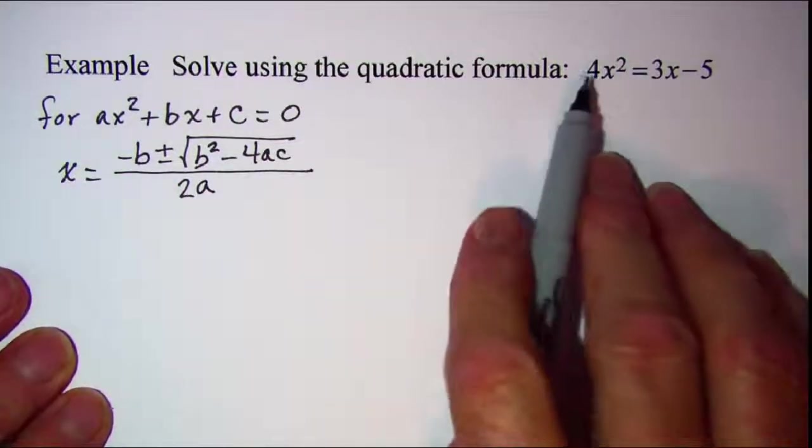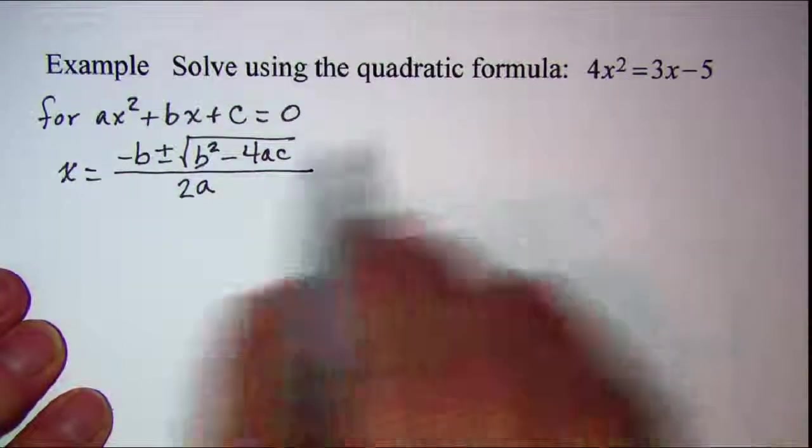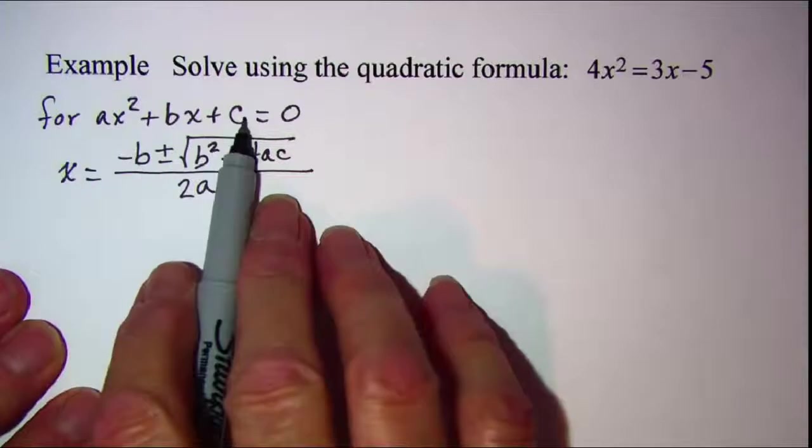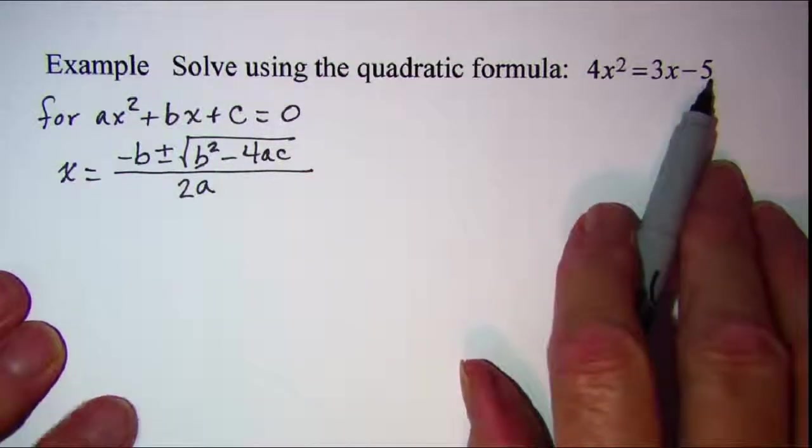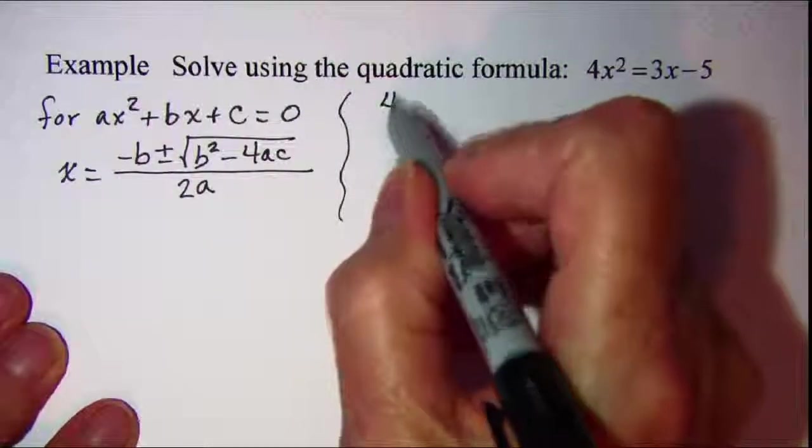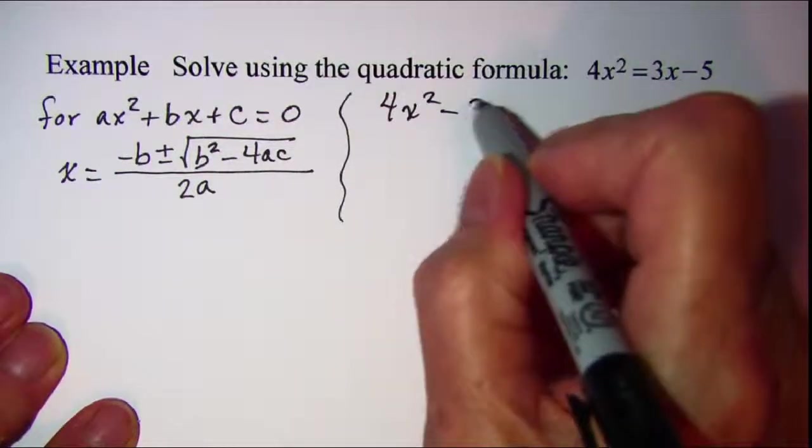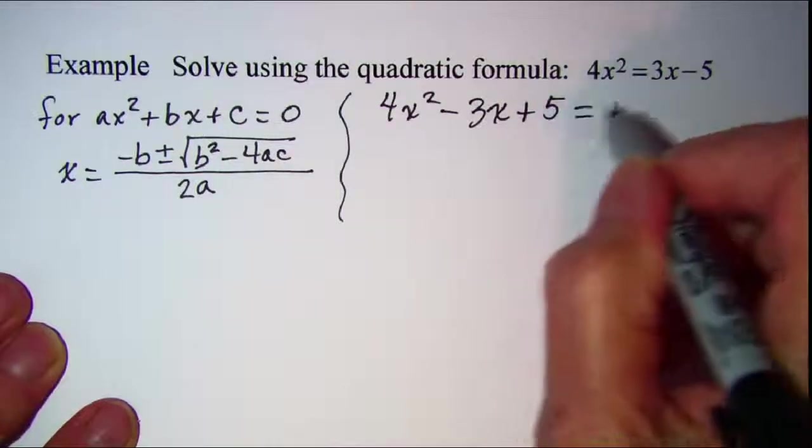So the first thing that we need to do if we're going to solve this by using the quadratic formula is we need to put it in standard form like this one. So I'll need to move these two terms to the left hand side. So I have 4x squared minus 3x plus 5 is equal to zero.